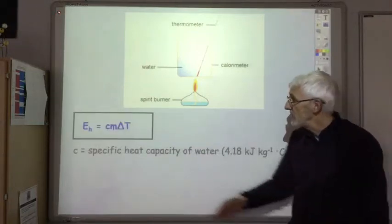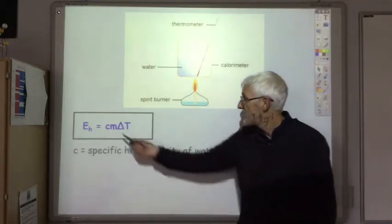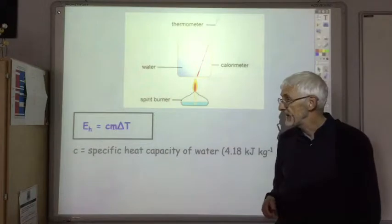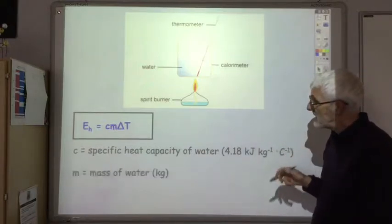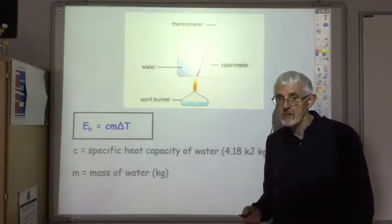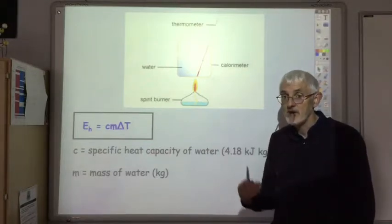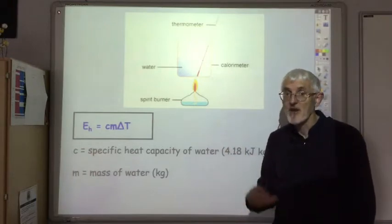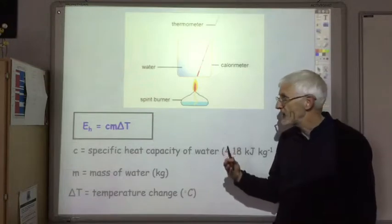We then use the equation Eh = cmΔT, where Eh stands for the heat energy given out, measured in kilojoules. C is the specific heat capacity of water, which is 4.18 kilojoules per kilogram per degree centigrade. Both this equation and this value are given in your data book. M is the mass of water in kilograms. Normally, the water will be given to you as a volume, usually in cubic centimeters. To convert cubic centimeters into kilograms, we divide by a thousand, because one liter of water weighs one kilogram. ΔT is just the temperature change, and these are all exothermic reactions, so it will be a temperature rise.